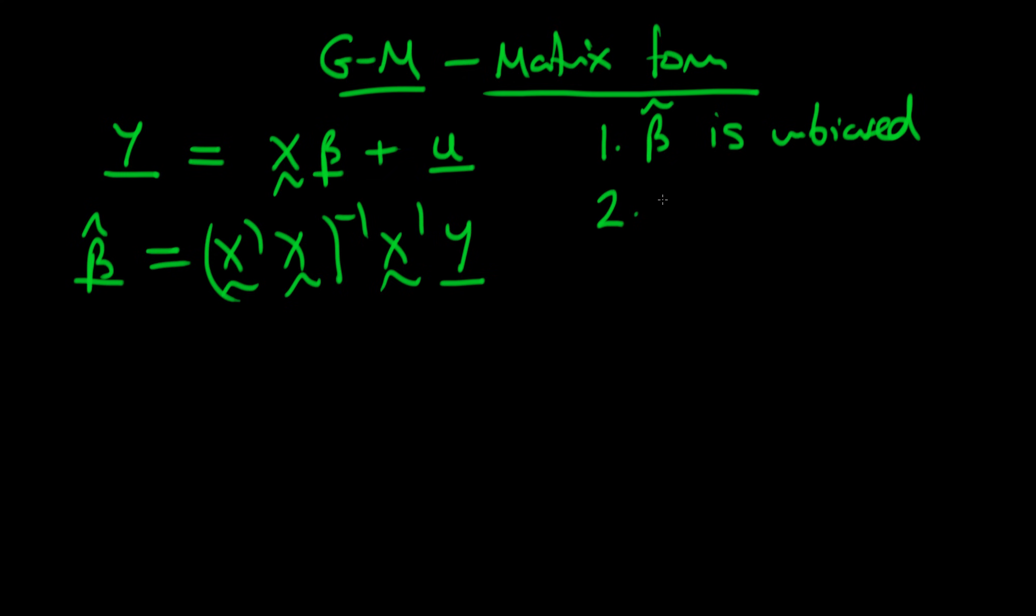Then we go ahead and we find the variance for beta tilde. The idea with this proof is that as we go through we will prove that the variance of beta tilde is greater than or equal to the variance of least squared estimators. In doing so we prove the Gauss-Markov Theorem.